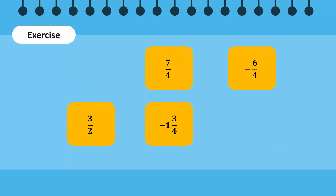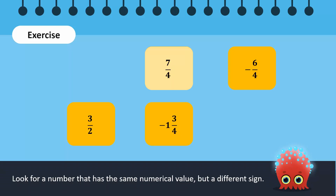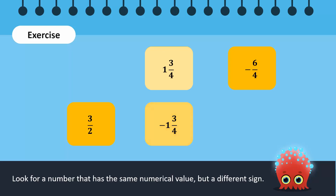Since seven over four is positive, its additive inverse must be negative. Minus six over four does not have the same numerical value as seven over four, so it is not the additive inverse. The mixed fraction of seven over four is one whole three over four, so these numbers are additive inverses of each other.